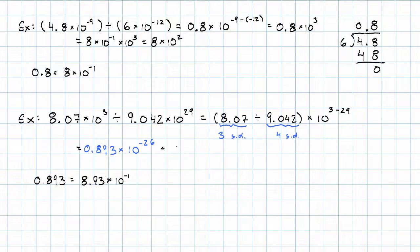So, this is 8.93 times 10 to the negative 1 times 10 to the negative 26. So, 8.93 times 10 to the negative 27.